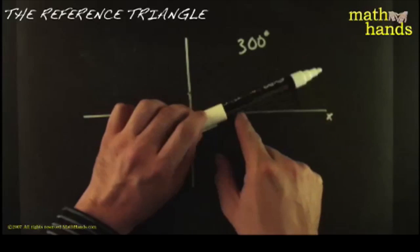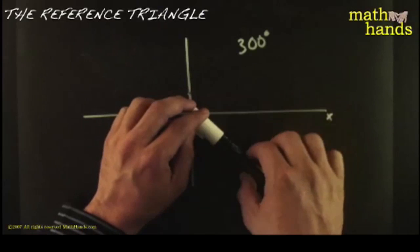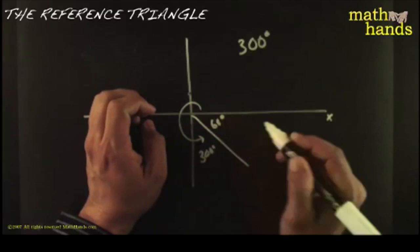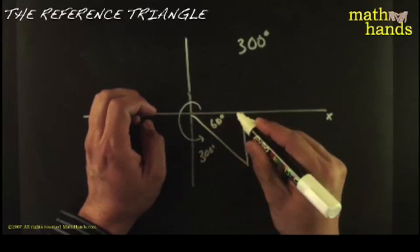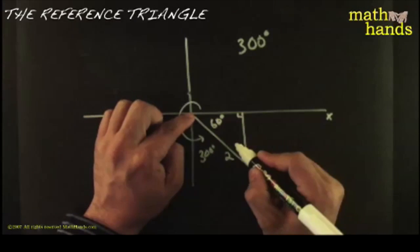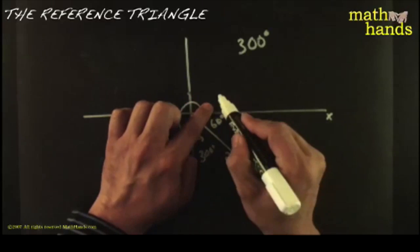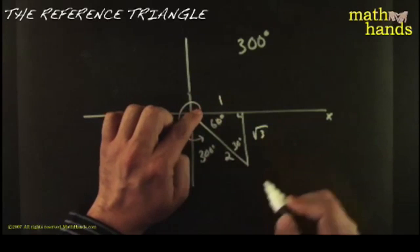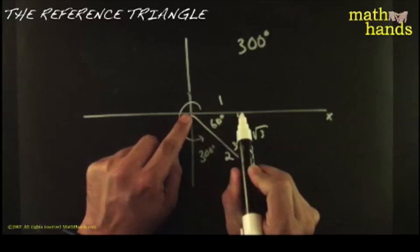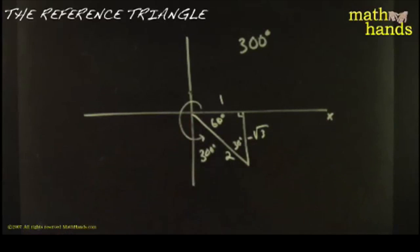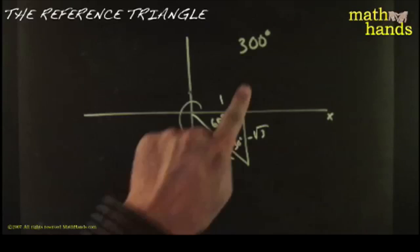So 360 is too much — come back 60. There it is: all the way to 300 degrees, 60 short of a full revolution. Draw the perpendicular. Make this any length you want — we'll make it length 2. Across from 30 you always find half the hypotenuse: that's 1. Across from 60 it would be the square root of 3. To the right is positive, down is negative — so this one must be negative. That's the reference triangle for 300 degrees.